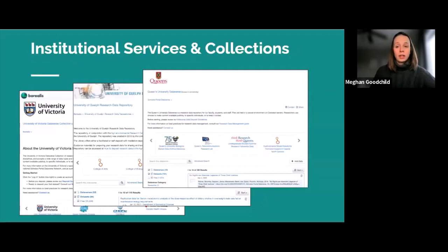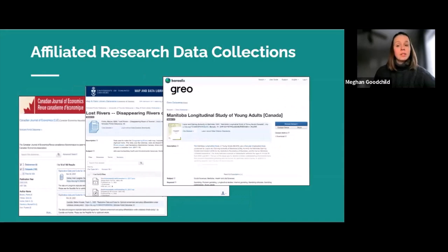Borealis supports institutional RDM services by providing a dedicated institutional repository collection showcasing institutional research data. Institutional administrators can customize the collections with sub-collections, descriptions, and links to related RDM services, guides, and local policies. Authorized researchers log in and are directed to their institutional collections for deposit and sharing. Some institutions provide additional mediated deposit and curation of research data to assist researchers in making their data FAIR. Borealis also supports affiliated and sponsored discipline-specific collections and research groups, including use cases such as journal data archiving, historical data digitization, and collaborative access to archival data collections.